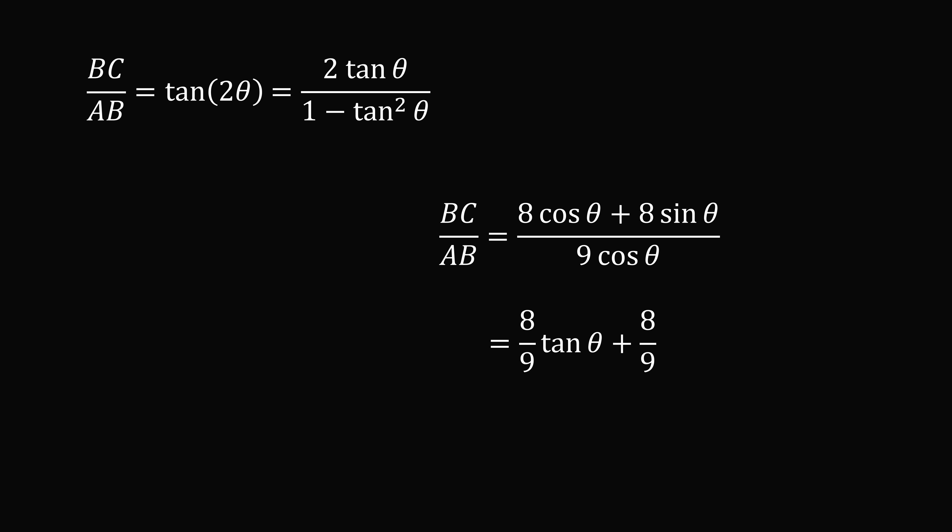We now have two different equations that are equal to BC divided by AB, so we can set them equal to each other. So, we have 2 tangent theta divided by 1 minus tangent squared theta is equal to 8 over 9 tangent theta plus 8 over 9.